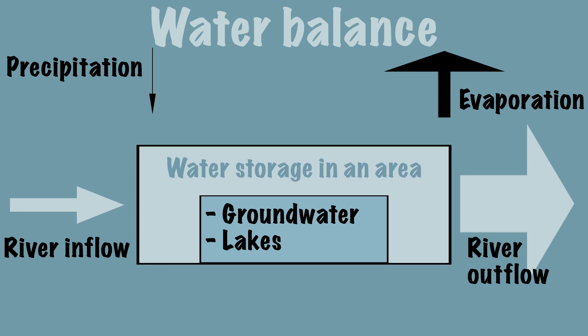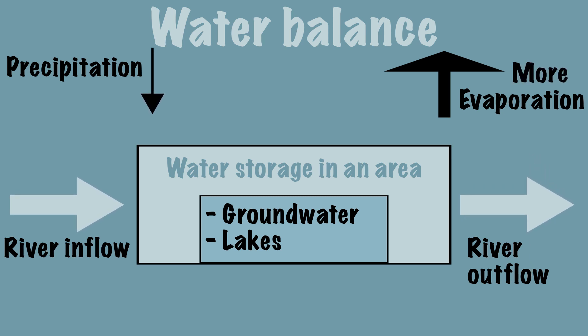Climate change is making it warmer, causing evaporation to increase in some areas. It can also become drier due to climate change. As a result, water inflow is reduced and outflow is increased, which can lead to a water shortage.